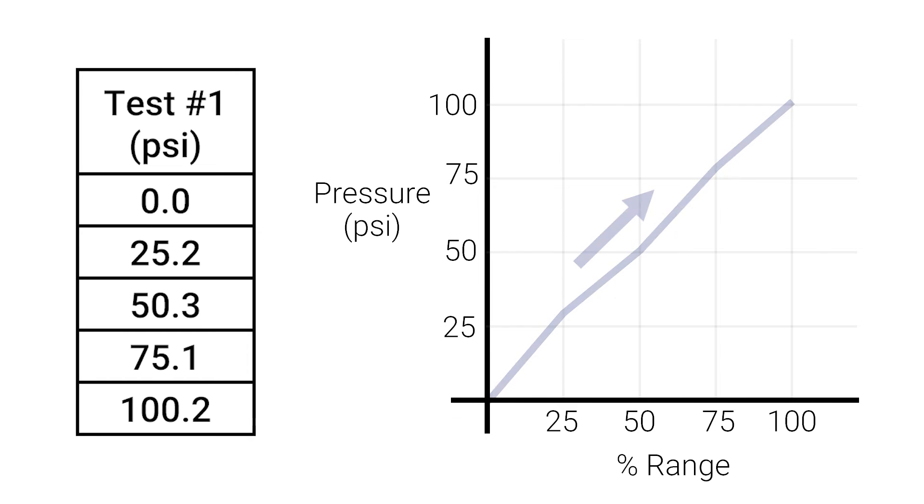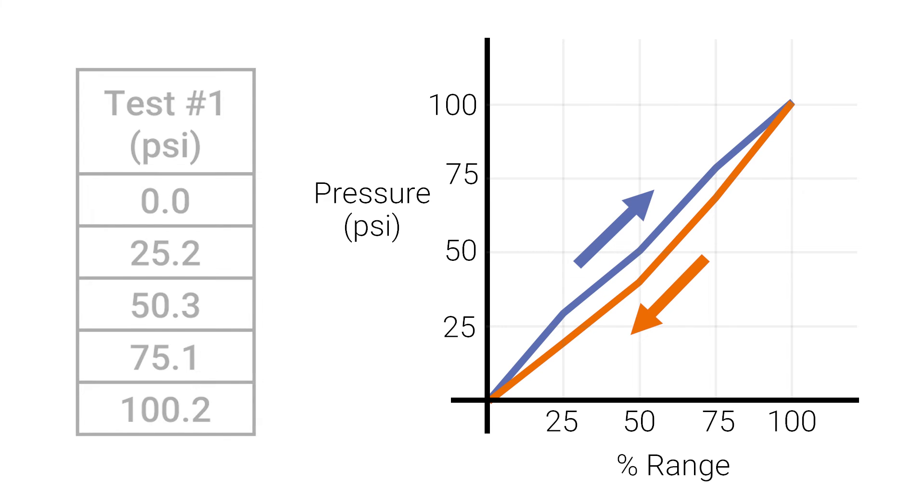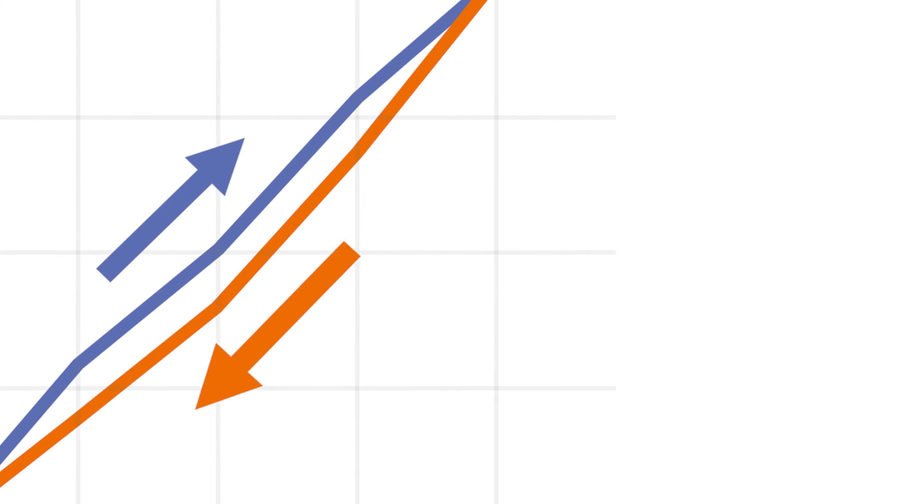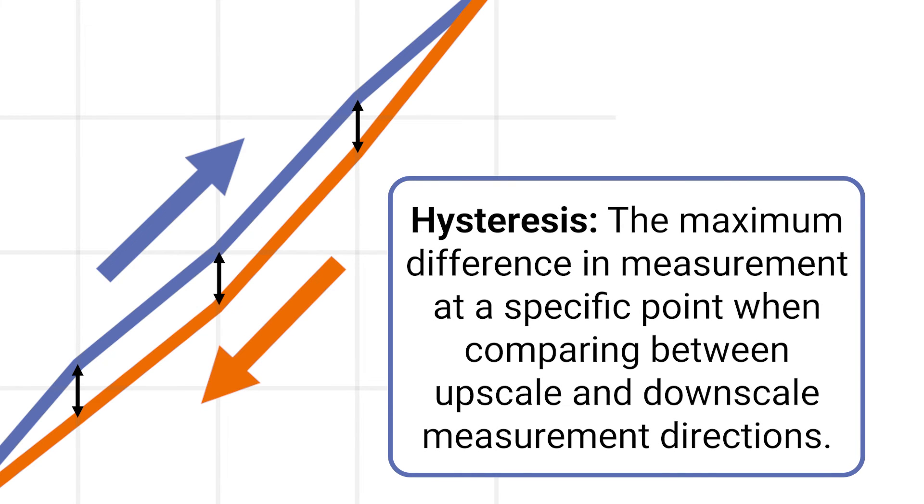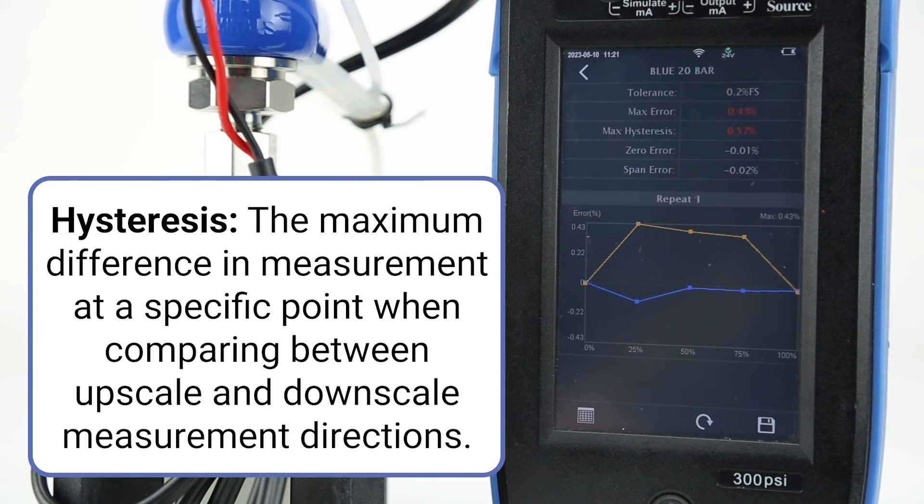When cycling a test like this up and down, the output of the measurement can change depending on the direction from the previous value, for example during pressurization and depressurization. This phenomenon is called hysteresis and must be recorded as it can be a significant source of uncertainty in the measurement.